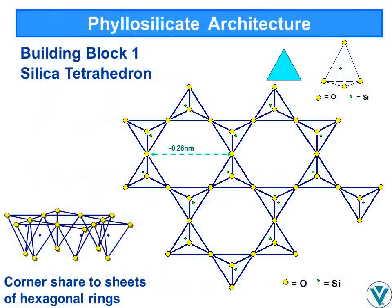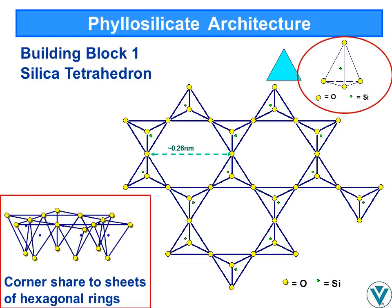The phyllosilicate or sheet silicate minerals can be considered inorganic polymers based on two basic monomer structures. One is the silica tetrahedron, which links, sharing an oxygen atom at three of its four corners to form a layer of linked rings with hexagonal openings. In most cases, the fourth or apical oxygen of each tetrahedron is pointed in the same direction.